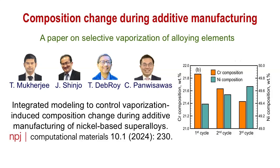The results of this study can be used to optimize the process parameters such as laser power, scanning speed, and powder layer thickness to ensure the production of high-quality components with desired chemical compositions.